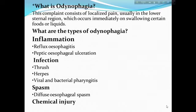What are the types of odynophagia? It is divided into four types: due to inflammation — reflux oesophagitis, peptic esophageal ulceration; infection — thrush, herpes, viral and bacterial pharyngitis; and spasm — diffuse esophageal spasm; and chemical injury.